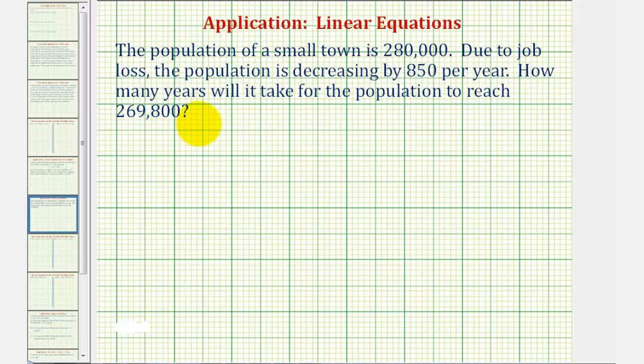We'll start by writing an equation to represent the population of the town after T years. Let's start by defining our variables. P will be equal to the population of the town, and T will be the time in years.